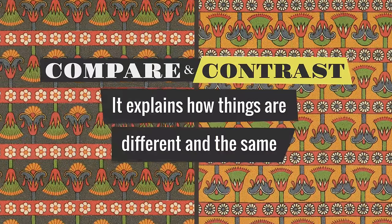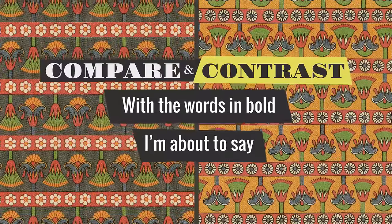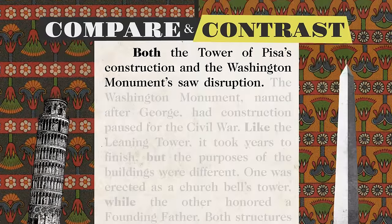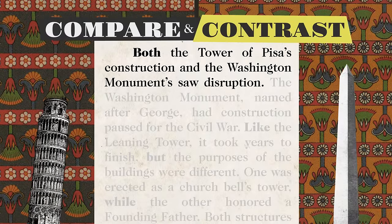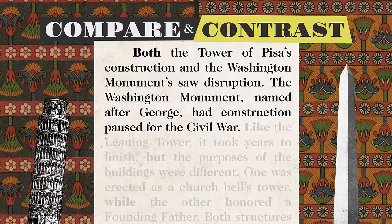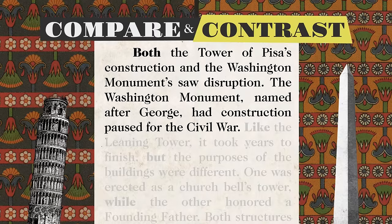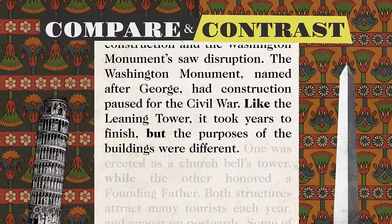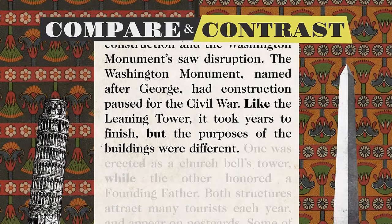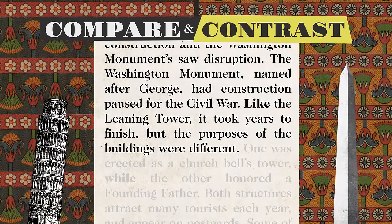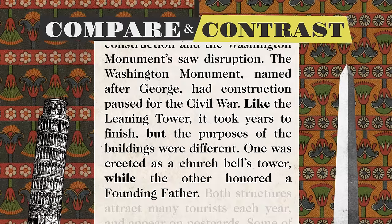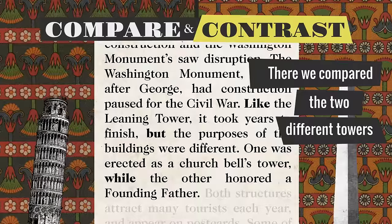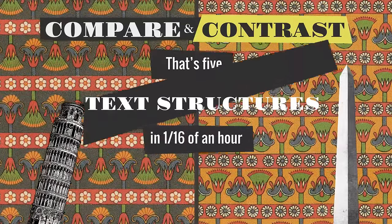Its text structure: compare and contrast. It explains how things are different and the same. 'Both the tower, a piece of construction, and the Washington Monument saw destruction. The Washington Monument, named after George, had construction pause for the Civil War. Like the Leaning Tower, it took years to finish. But the purposes of the buildings were different — one was erected as a church bell's tower, while the other honored a founding father.' There we compared the two different towers. That's five text structures in a sixteenth of an hour.